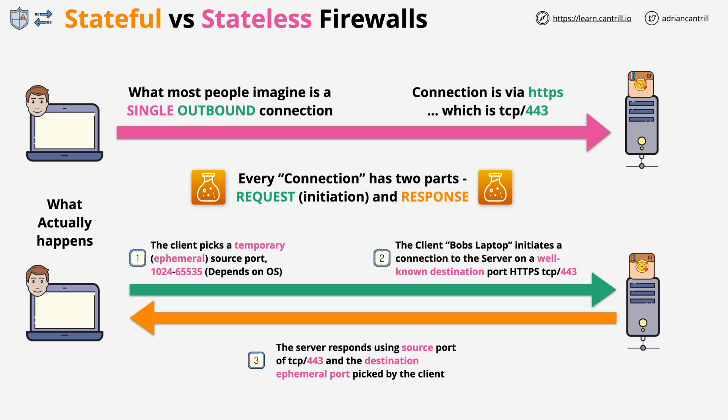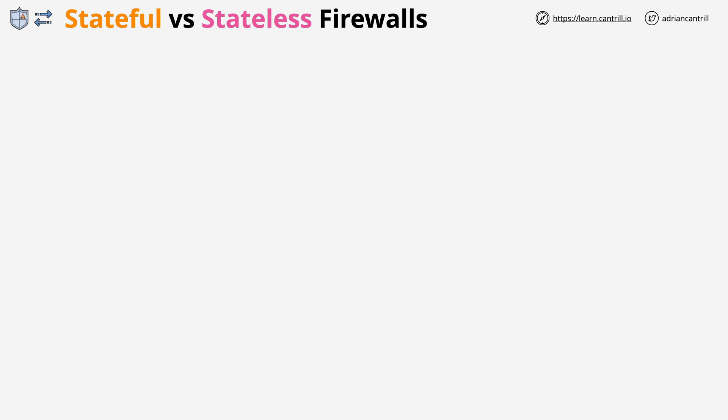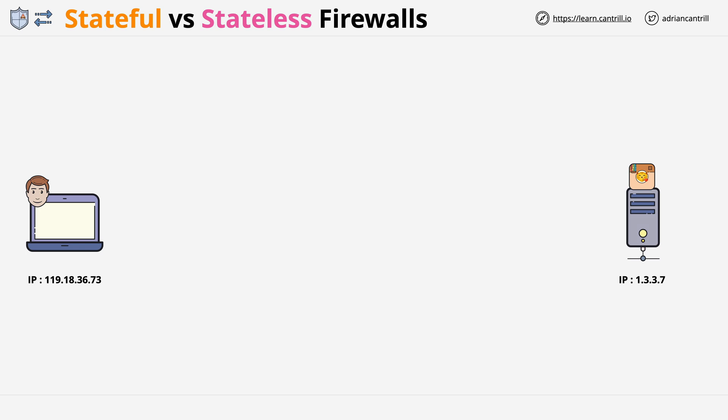I hope this makes sense so far. If not, you need to repeat this first part of the video, because it's really important to understand. Now let's look at this example in a little more detail — the same connection with Bob's laptop on the left and the catagram server on the right. The left is the client and the right is the server, with request and response as the correct terms.